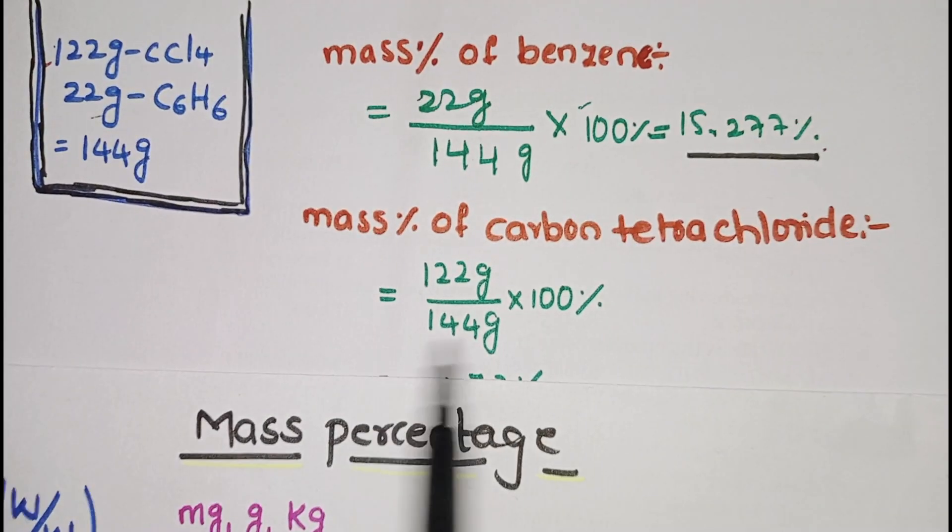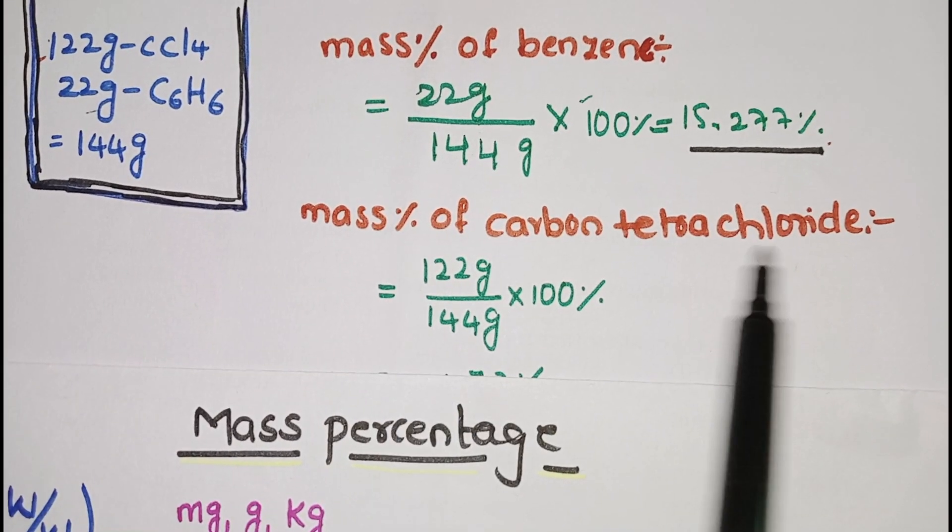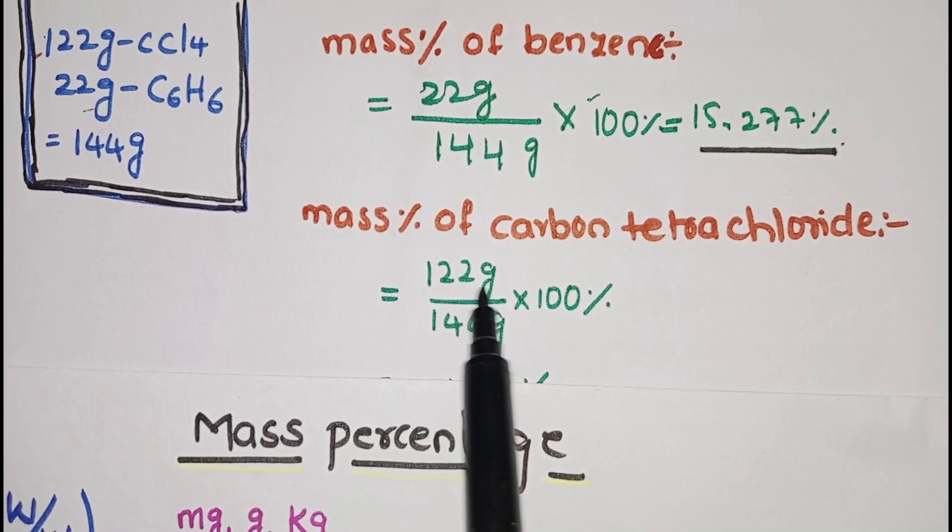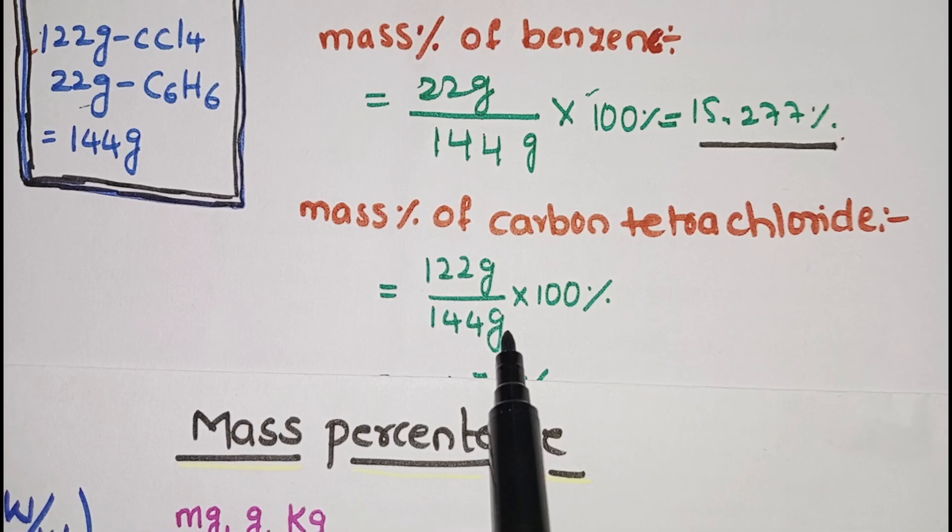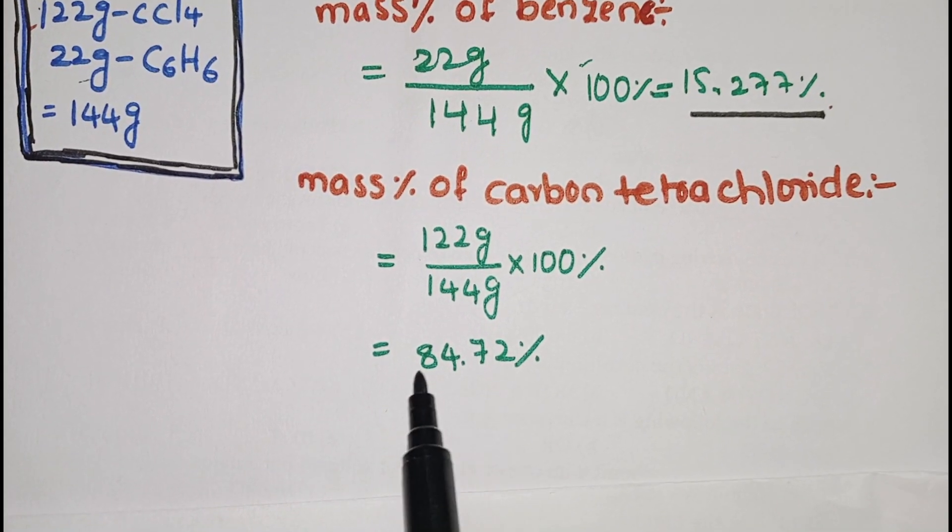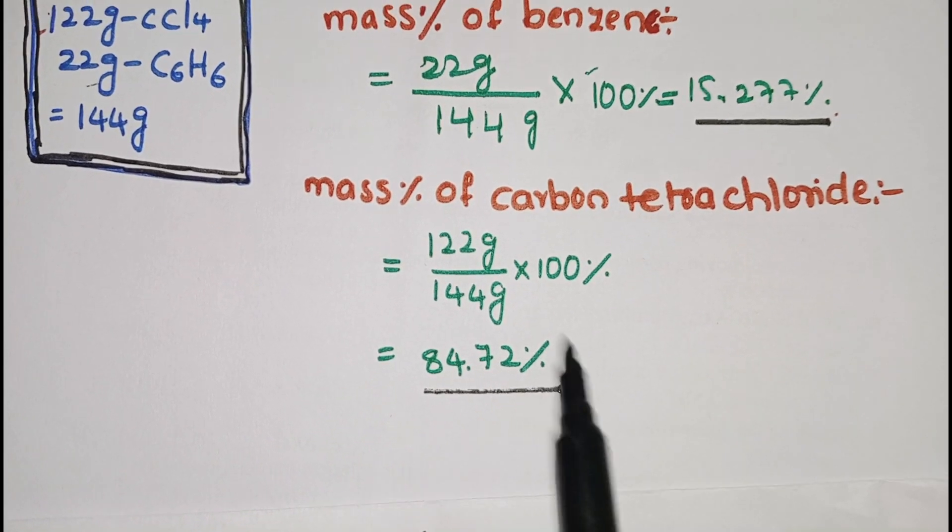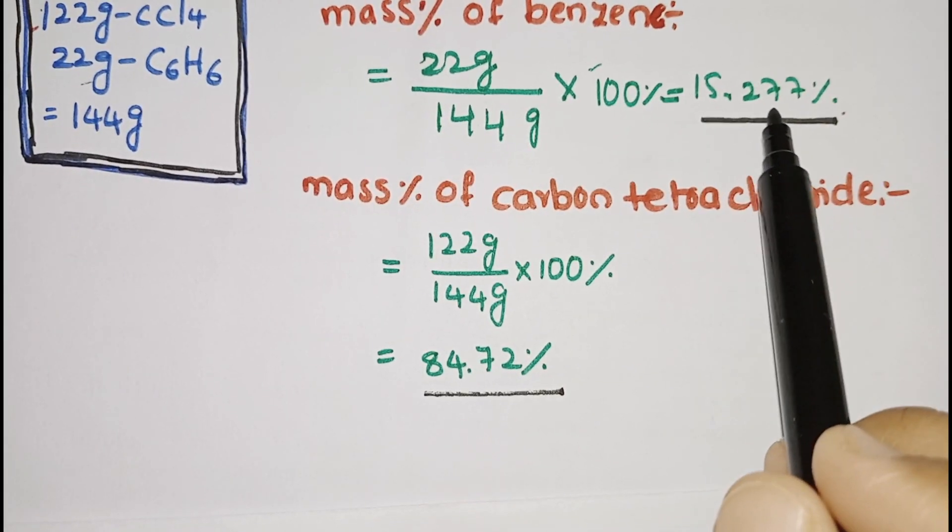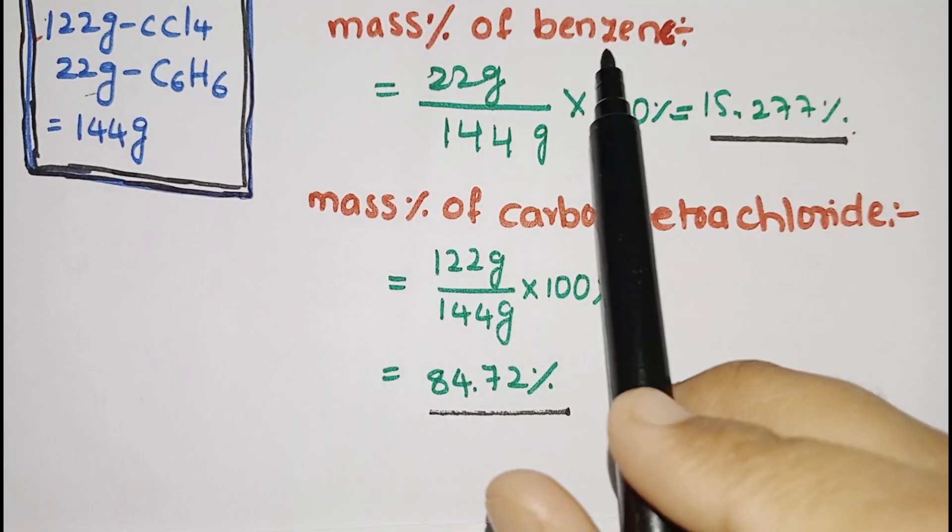Similarly, mass percentage of carbon tetrachloride: what is the component here? Carbon tetrachloride. So 122 grams divided by 144 total mass times 100 equals 84.72%. This is the mass percentage of carbon tetrachloride in the solution, and 15.227% mass percentage of benzene.